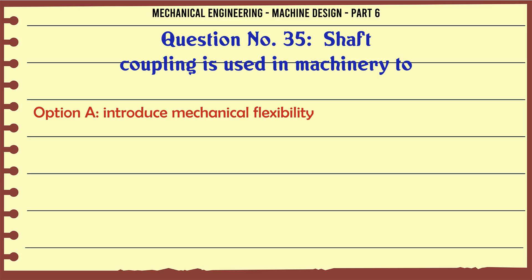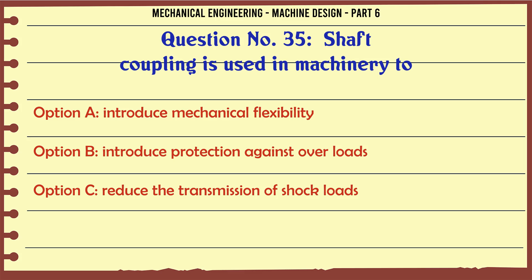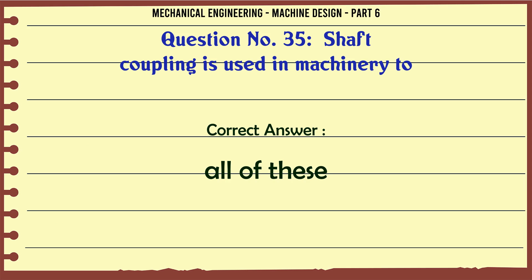Shaft coupling is used in machinery to: A) introduce mechanical flexibility, B) introduce protection against overloads, C) reduce the transmission of shock loads, D) all of these. The correct answer is all of these.